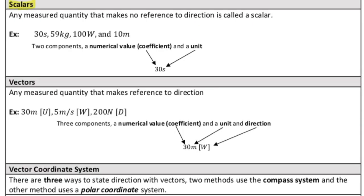Starting off with scalars. These are any measured quantity that do not make reference to direction. Some examples: 30 seconds, 59 kilograms, 100 watts, 10 meters.